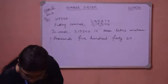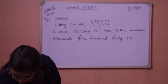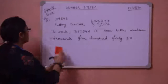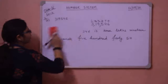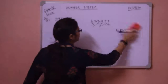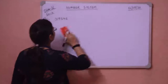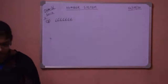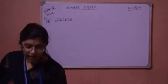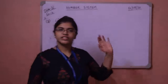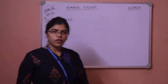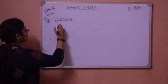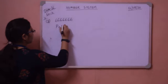Now I am taking another one — sum number 2J. This is the number for sum number 2J. First we will put commas in this.